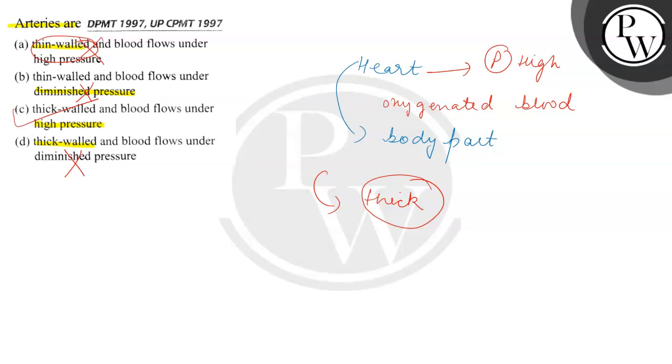Option C is right here: thick wall and blood flows under high pressure. I hope you understood the question well. Thank you.